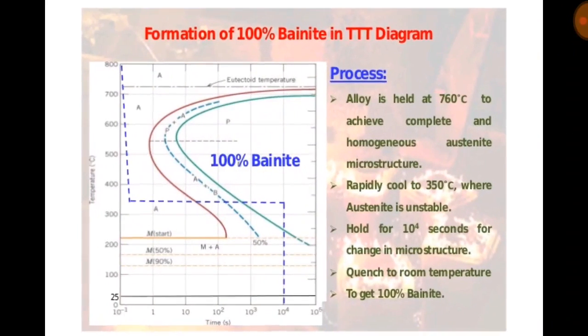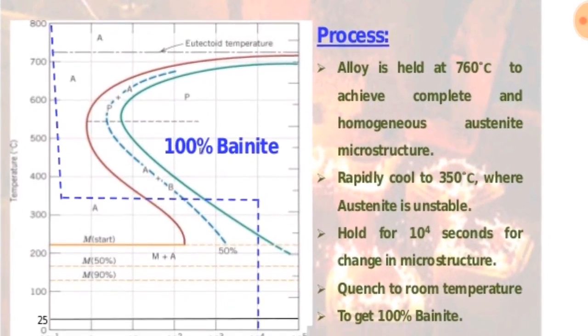Formation of 100% bainite in the TTT diagram. Process: The alloy is held at 760 degrees Celsius to achieve complete and homogenized austenite microstructure.